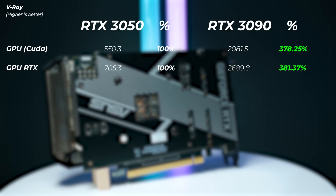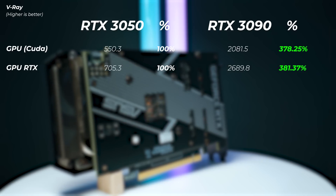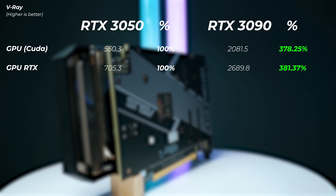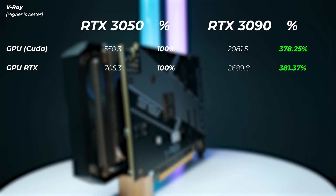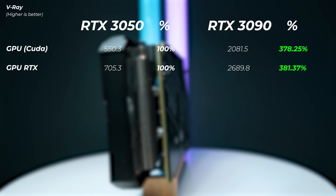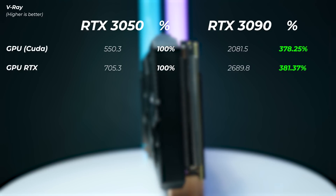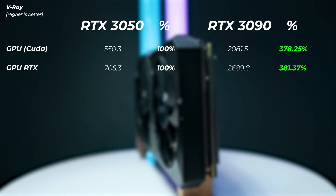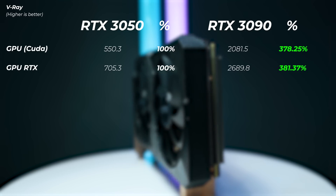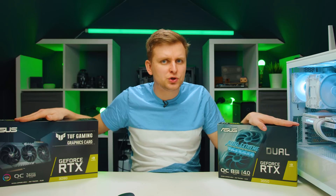In V-Ray, the RTX 3090 is 378% faster — roughly 3.8 times faster — on both the CUDA score and RTX score. This is excellent scaling: recall the 3090 has about four times the RT cores, tensor cores, TMUs, and CUDA cores, and in V-Ray where you actually utilize all of that, it pushes nearly four times faster with only marginal scaling loss. All the middle-tier cards should slot roughly proportionally in between.